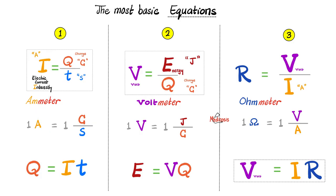Here are the three equations again: one ampere equals one coulomb per second; one volt equals one joule per coulomb; and one ohm equals one volt per ampere.